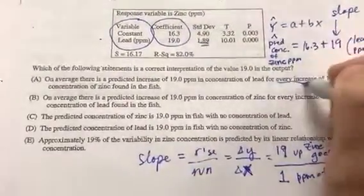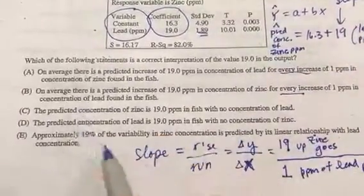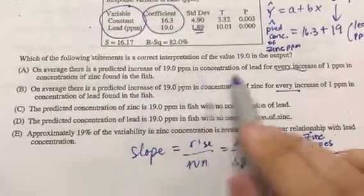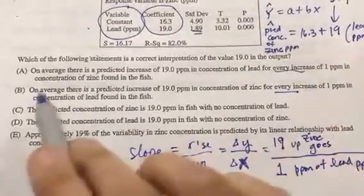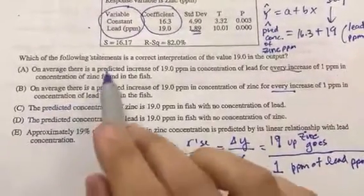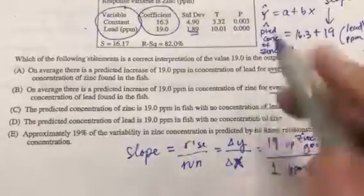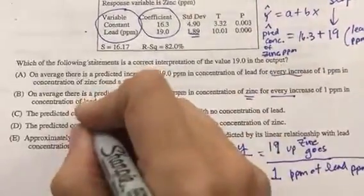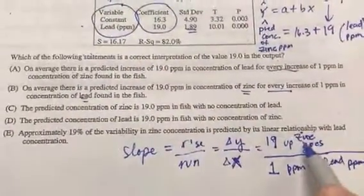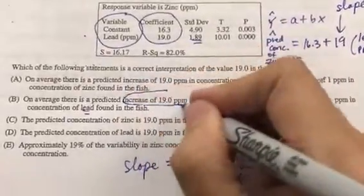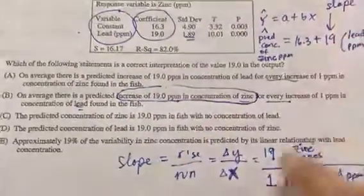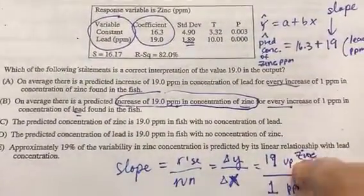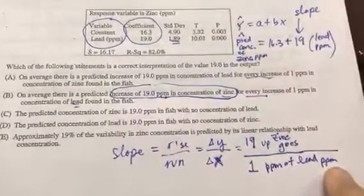So now we're just looking for the sentence that matches it the most. And let's see. I like this for every. So let's make sure. It says, on average, the predicted increase goes up. It looks like these two are almost exactly the same. But see this word zinc and lead. So let's clue in on that. For each increase of 19 zinc, for every one of lead, that is exactly what we got. That's B is definitely our answer. Now let's go to 232.